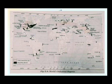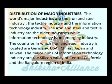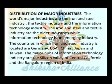The world's major industries are the iron and steel industry, the textile industry, and the information technology industry. The iron and steel and textile industries are the older industries, while information technology is an emerging industry, also known as a sunrise industry.